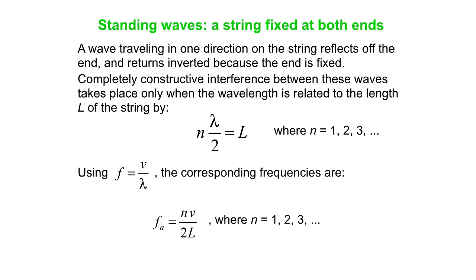fn = n(v/2L). v is a fixed parameter, depends on the string. L is fixed. n is an integer.